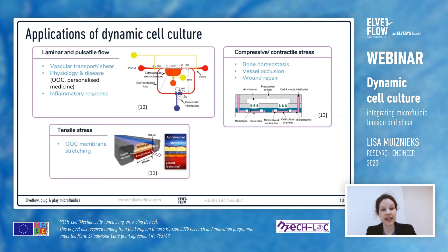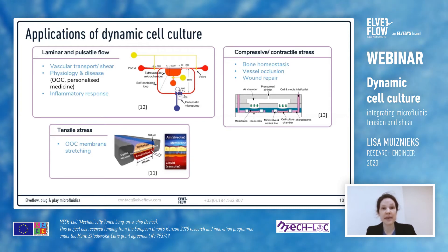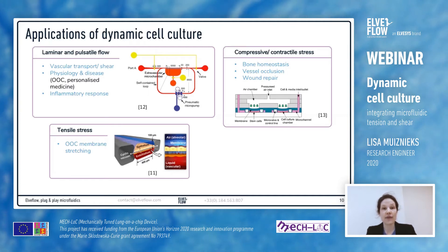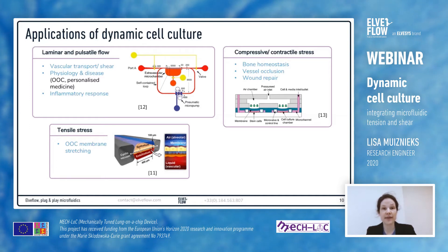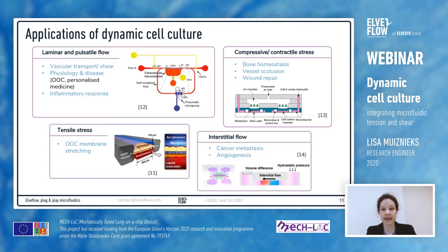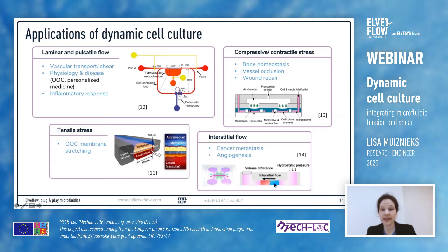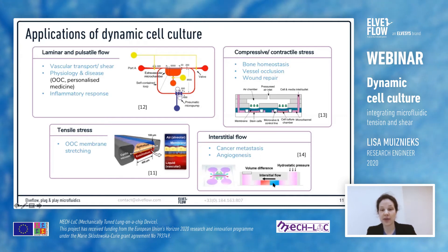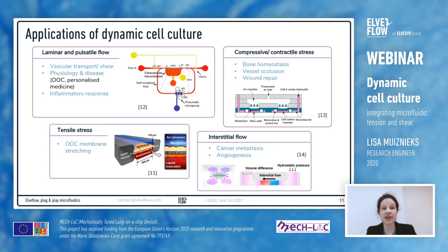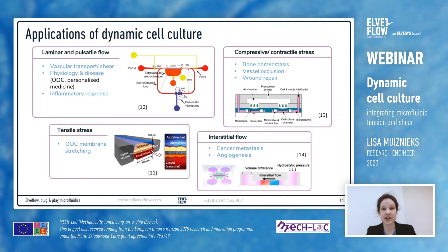The ability to apply interstitial flow — modeled here as a difference in hydrostatic pressure represented as a volume difference in two reservoirs opposite a central channel — enables researchers to look at very complex systems such as cancer metastasis and angiogenesis.